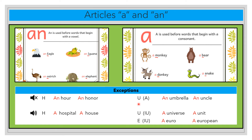With the letter u, when the letter u sounds like 'uh', you need to use an. For example, umbrella and uncle — an uncle, an umbrella — because the letter u sounds like 'uh': umbrella, uncle.